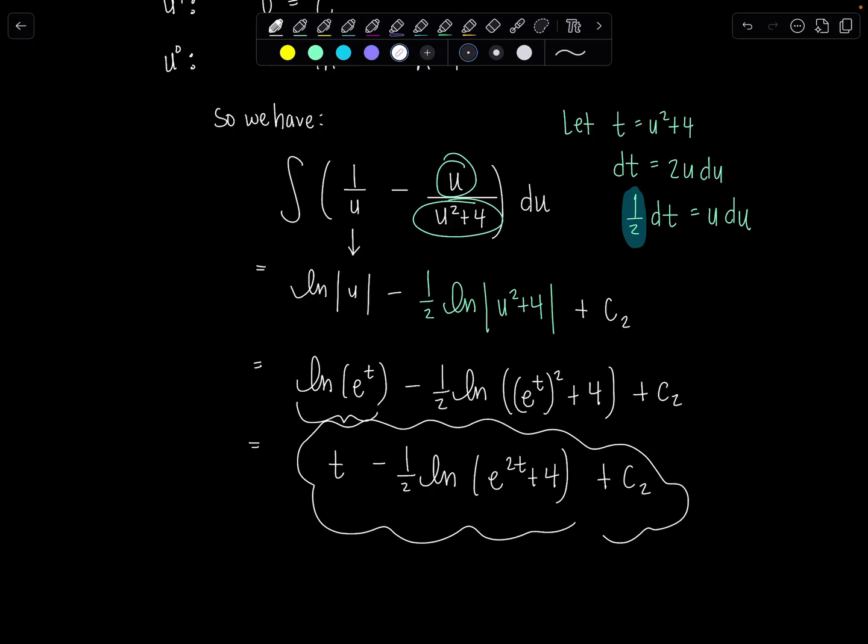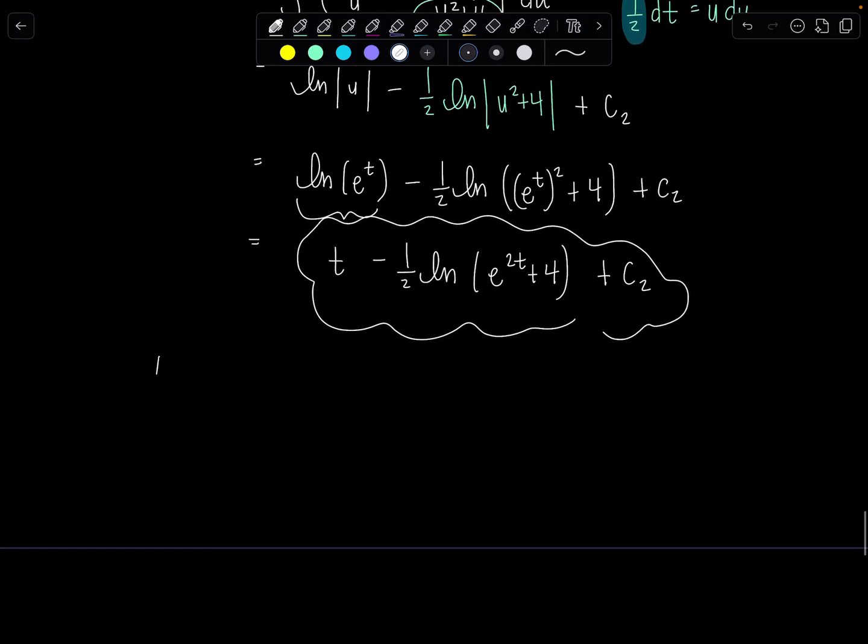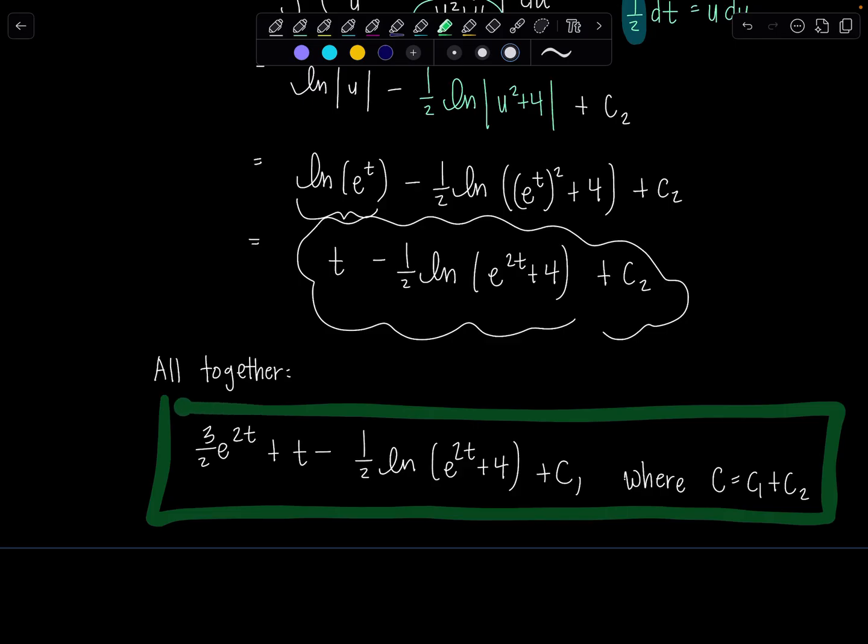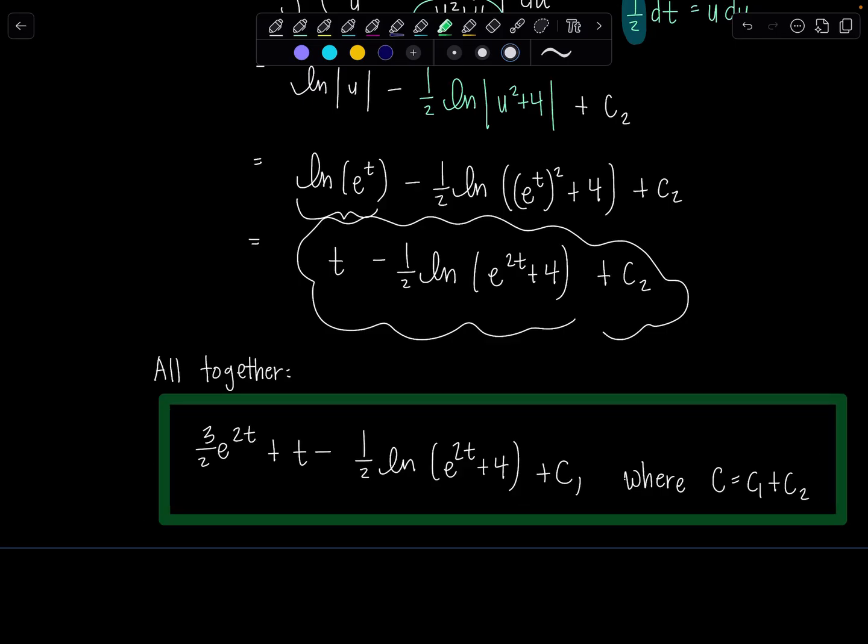So we could just put this all together and be done with things, go about our day. Okay, so we have now 3 halves e to the 2t plus t minus 1 half natural log e to the 2t plus 4 plus c. And then we have to tell the people c is c1 plus c2. And then you know what we have to do here? We're going to box this with pride for a job well done. Beautiful.